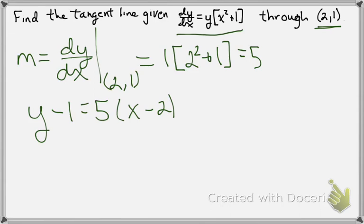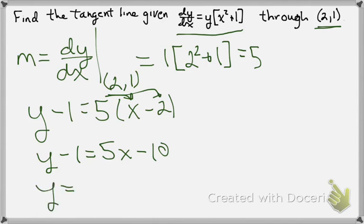Or if we wanted this in slope-intercept form, we can actually just convert from this form, because we know y minus 1 equals 5x minus 10. That comes from distributing the 5, and then adding the 1 over. So y equals 5x minus 9 would be our tangent line.